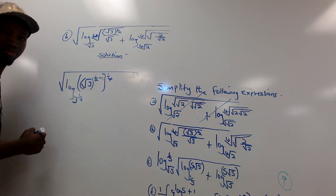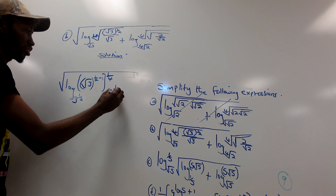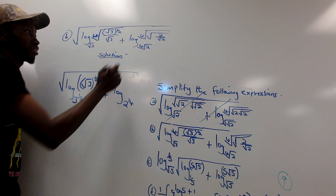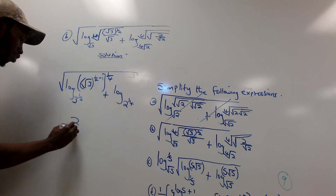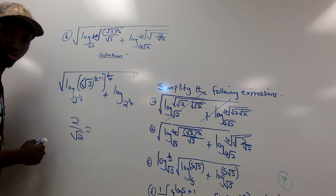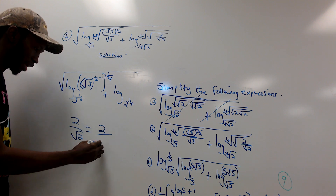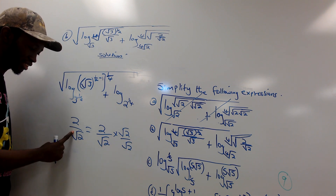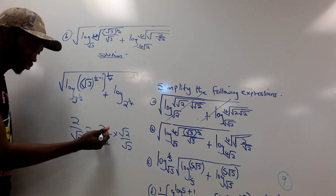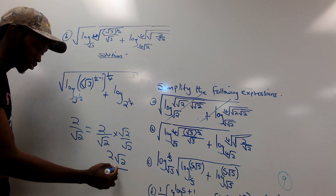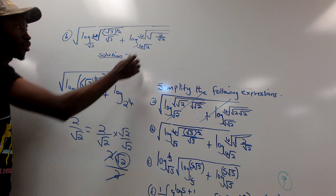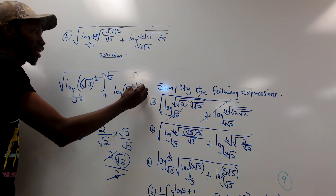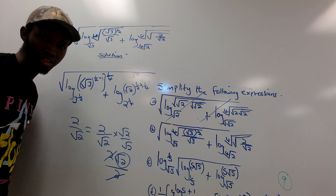For the second log term: the fourth root of 2 is 2 raised to 1/4 as the base. For the argument, 2 over root 2 — we rationalize by multiplying by root 2 over root 2: 2 × root 2 divided by 2 = root 2. So the argument simplifies to root 2, which is 2 raised to 1/2, then raised to the power 1/4 from the outer fourth root.